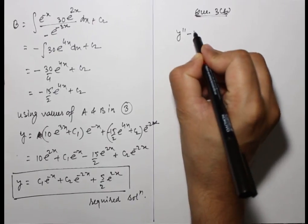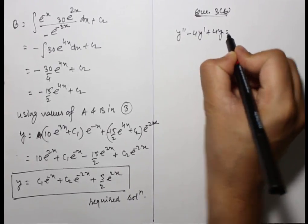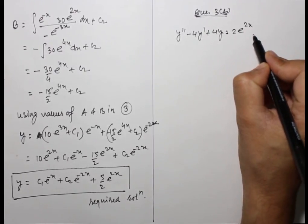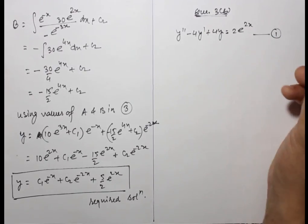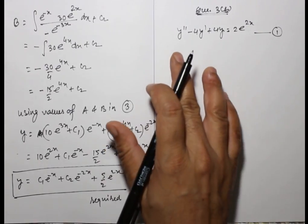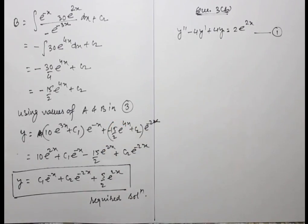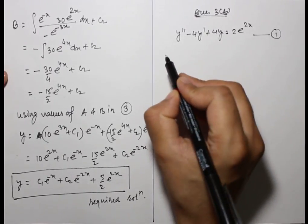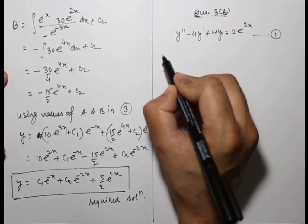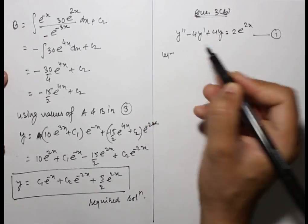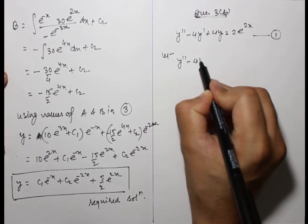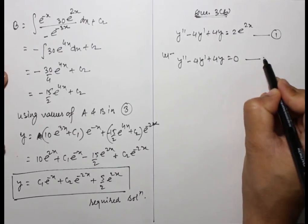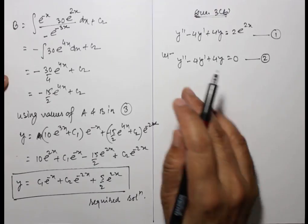The differential equation is y'' - 4y' + 4y = 2e^(2x). We just find the particular solution of this non-homogeneous differential equation. First, let y'' - 4y' + 4y = 0. This is the homogeneous equation.